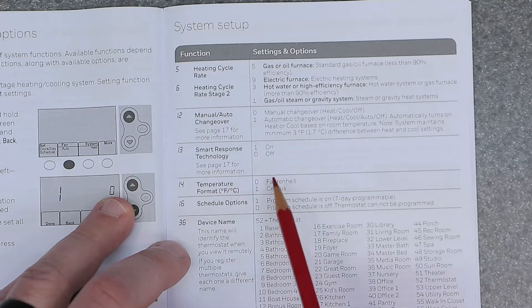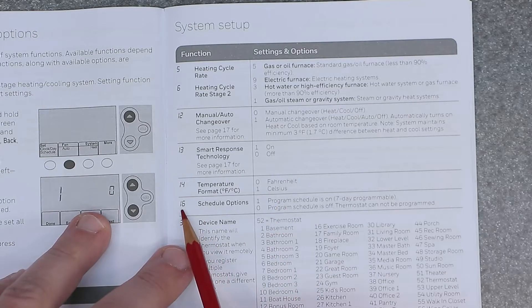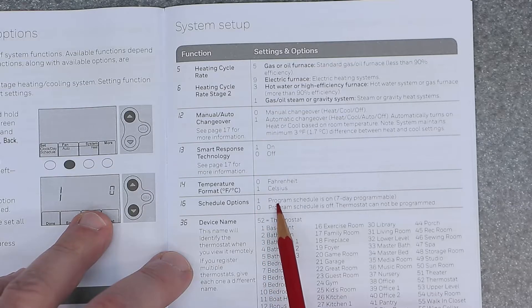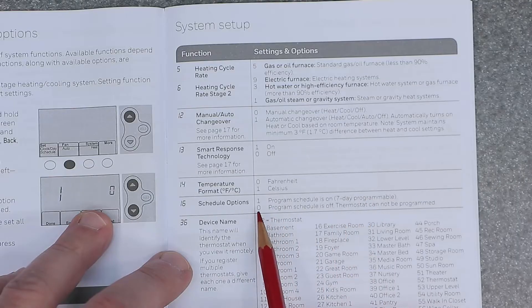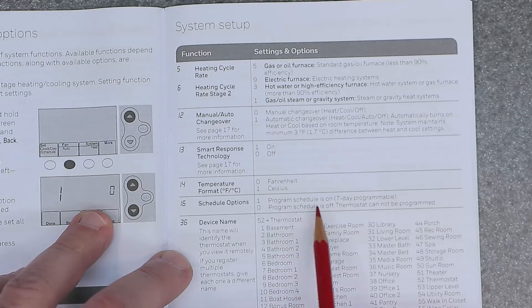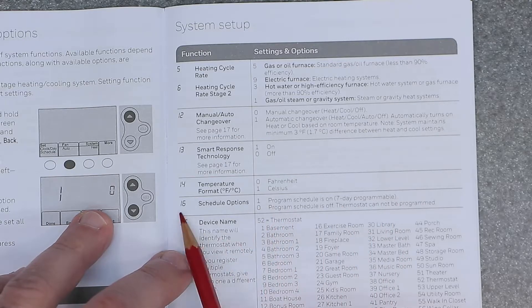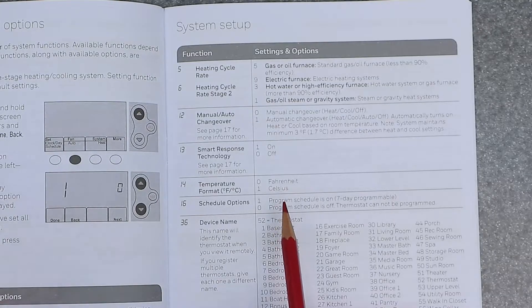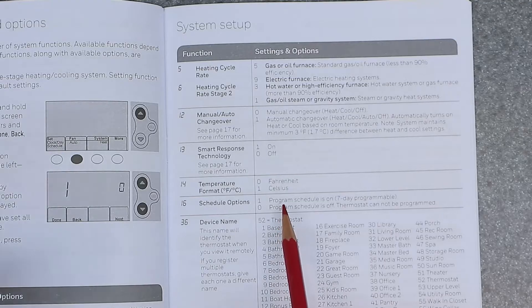Number 14 is temperature format. So zero is Fahrenheit. One is Celsius. 16 is schedule options. One is program schedule is on, seven day programmable. And zero is program schedule is off. Thermostat cannot be programmed. So this here, number 16 is if you want to operate it as a complete manual thermostat, non-programmable. You can go ahead and do that and make it the most basic thing ever.